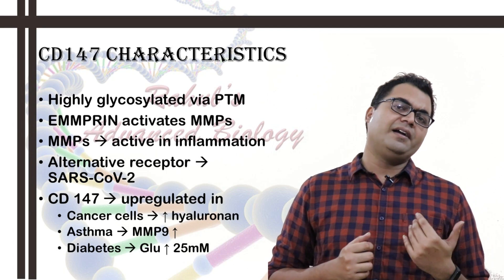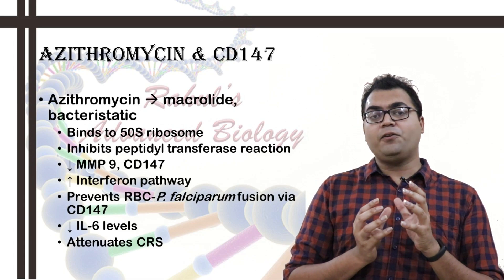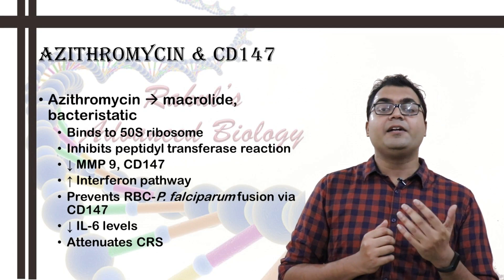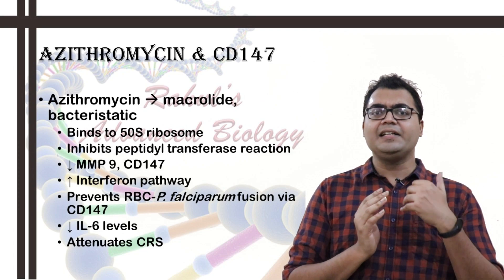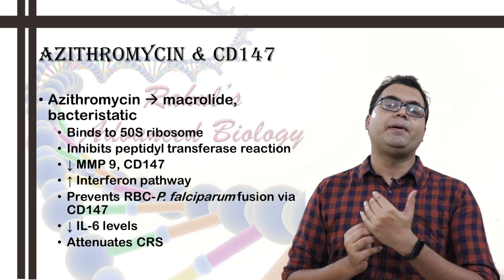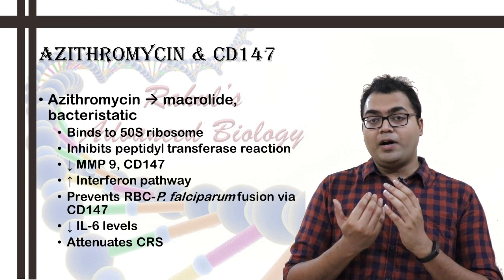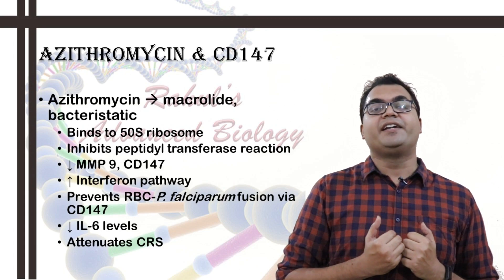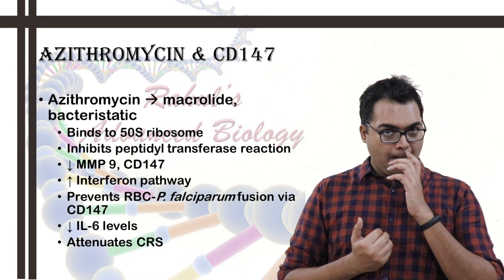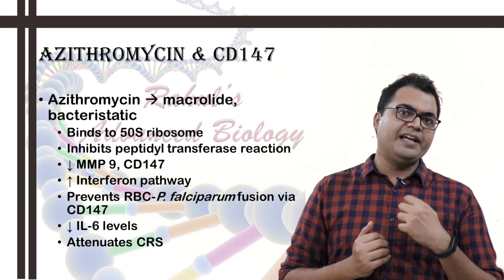Azithromycin, which I talked about in my previous videos, has been found to inhibit the invasion of RBCs by Plasmodium falciparum, which causes malaria. Azithromycin is a macrolide class antibiotic that specifically binds to the 50S ribosome and inhibits the peptidyl transferase reaction. It has also been found to inhibit CD147 by down-regulating it. Doxycycline, another antibiotic, has also been found to down-regulate CD147 in gallbladder.